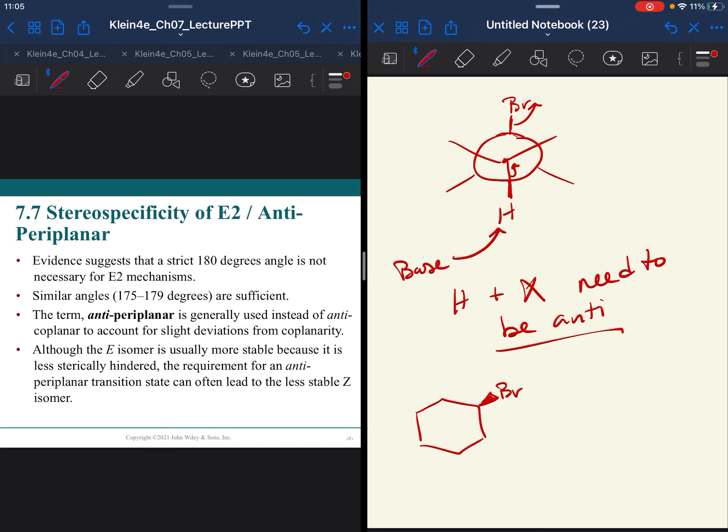So let's say we have a bromine here and we have protons next to it. I know which proton is going to be taken in an elimination because I know they need to be anti to one another. They can only be anti if they're on opposite sides of the ring. So the base has to take the proton on the opposite side of the ring from the leaving group.